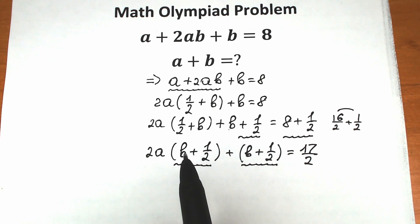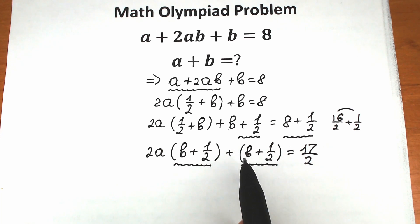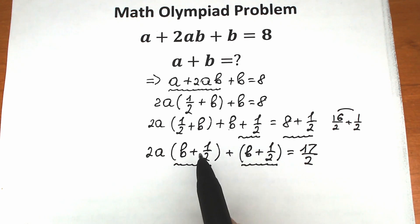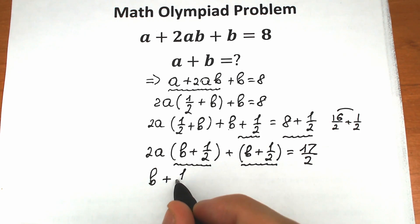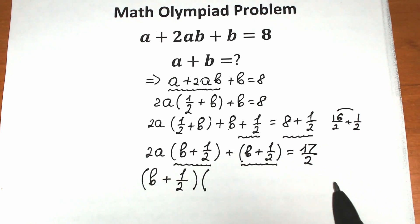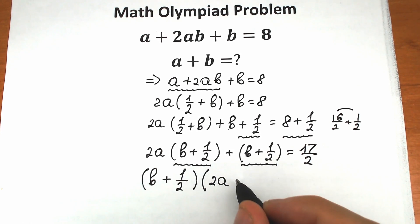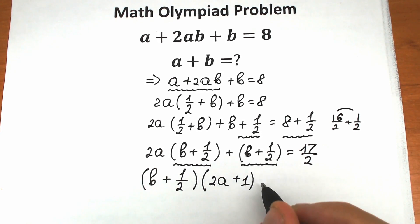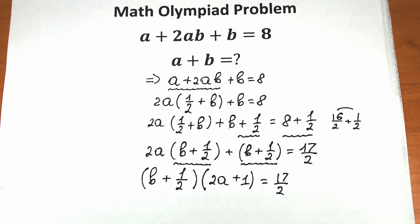Since we have the same expression (b plus 1/2) in both parts, we can factor it. Factoring gives us (b plus 1/2) times (2a plus 1), equal to 17 over 2.